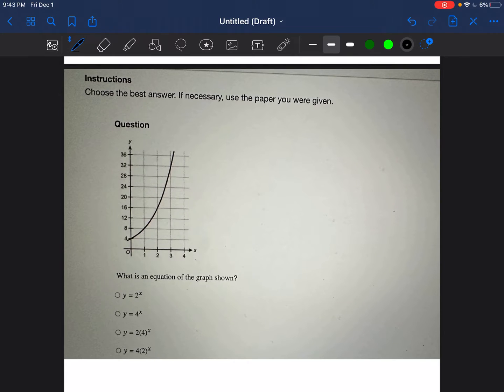Okay, so we're going to choose the best answer. If necessary, use the paper you were given. So the question says, what is an equation of the graph shown? So we are going to have to choose from these four equations to say which one of these four equations represents that line that's drawn.